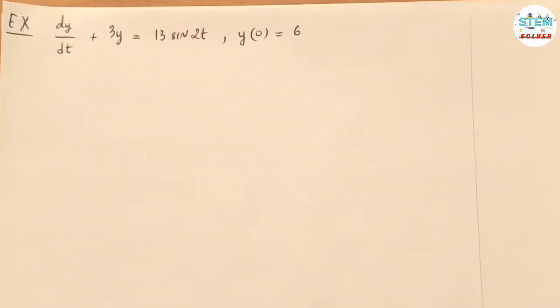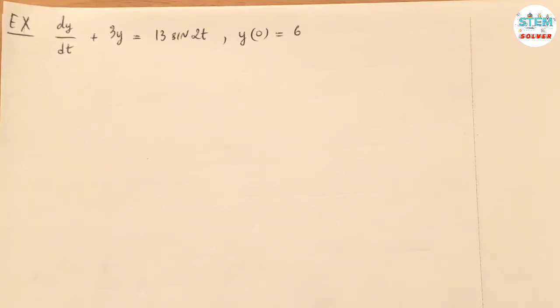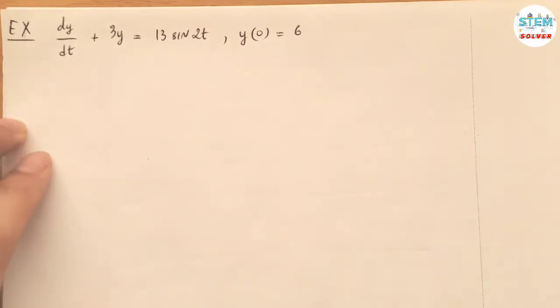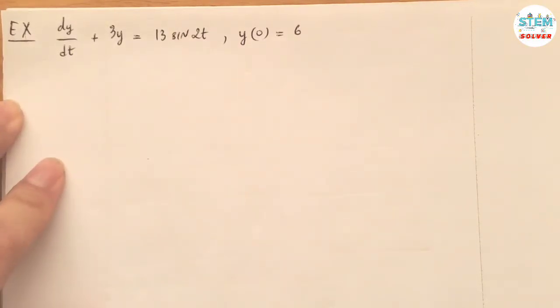We're using the Laplace transform to solve the initial value problem: dy/dt plus 3y equals 13 sine 2t, with the initial condition y(0) equals 6. By the transform of a derivative theorem,